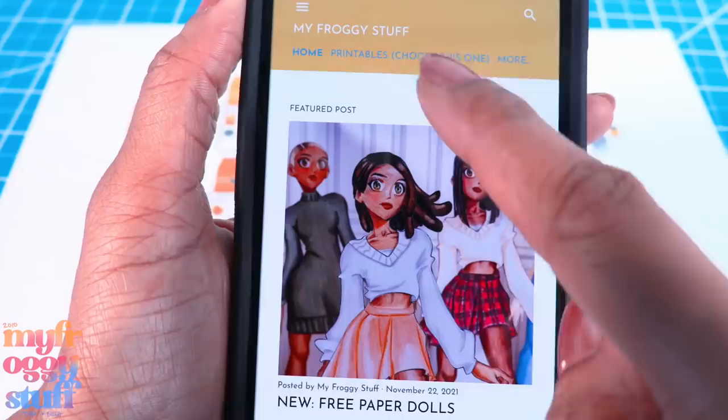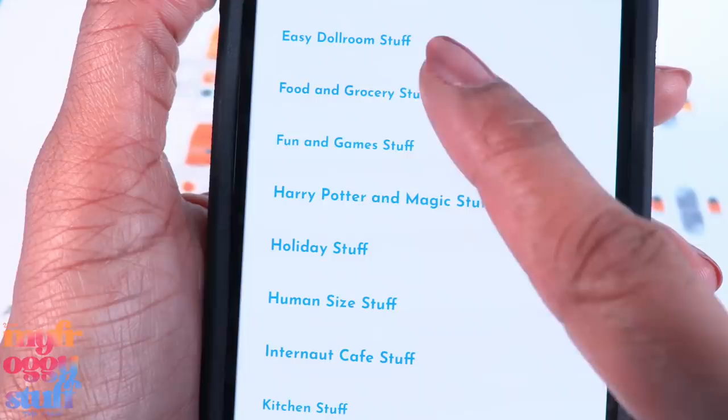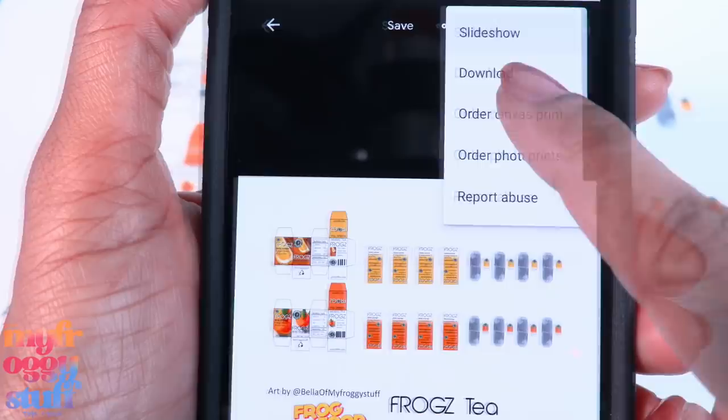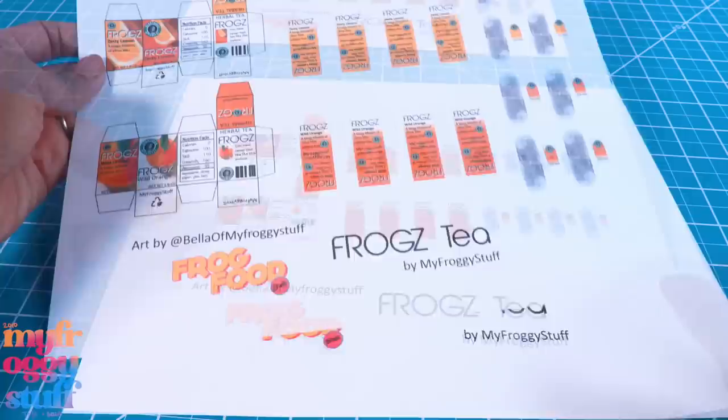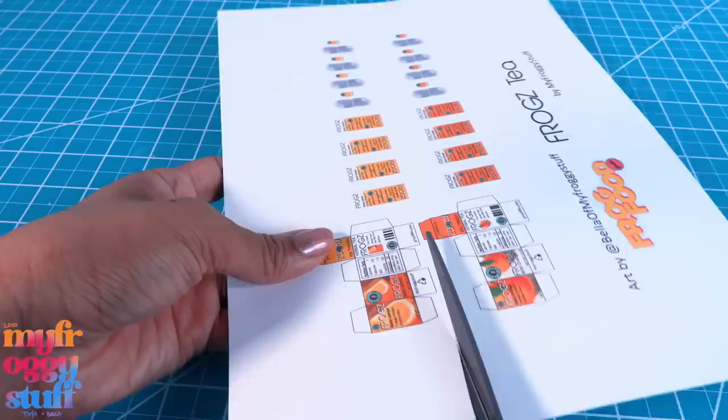First up, tea. This printable is available on our blog myfroggystuff.blogspot.com. Click the tab that says printables, choose this one, scroll down to the album that I want. Let's select food and grocery. It will open in a new tab and then we can just pick on the printable we want. I click the three little dots in the top corner to download and print.